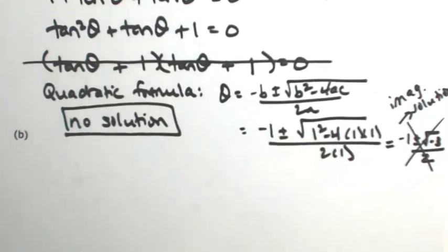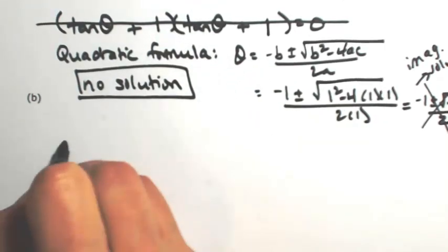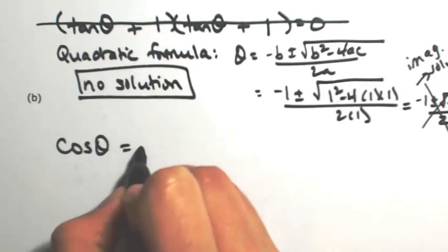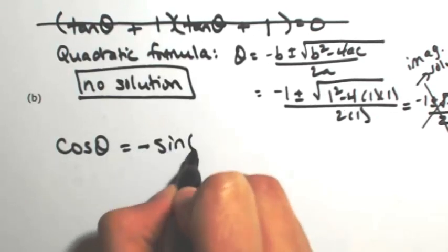That wasn't so bad. Let's look at another one. Let's see the cosine of theta equals the negative sine of negative theta.